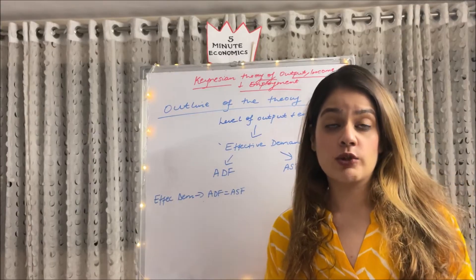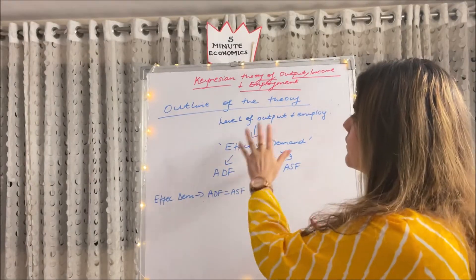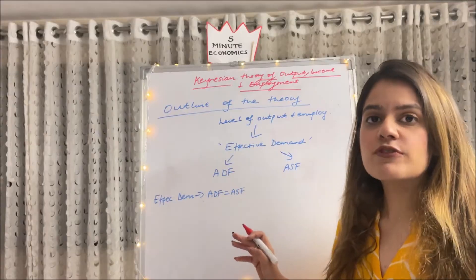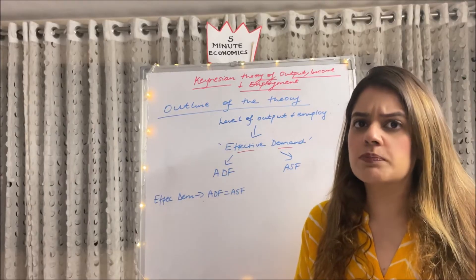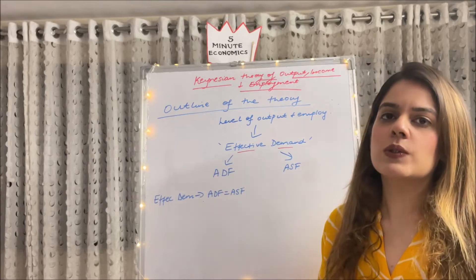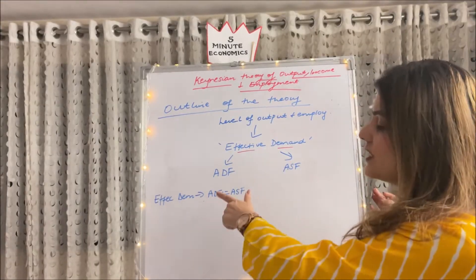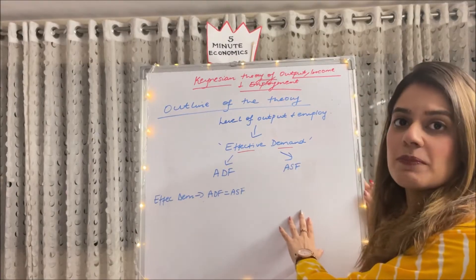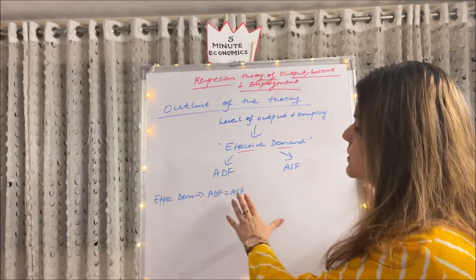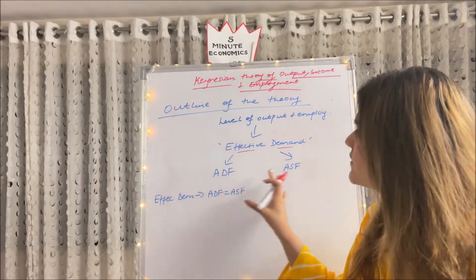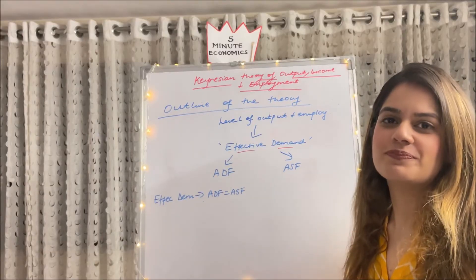Before we head to the main theory, let me give you an outline so you can clearly understand where we are heading. To determine the level of output and employment in the economy, we have to determine effective demand. Effective demand depends on two things: ADF and ASF — the aggregate demand function and aggregate supply function. The effective demand is found at the point where ADF is equal to ASF. Effective demand is a highly crucial factor in determining the level of output and employment in the Keynesian theory.